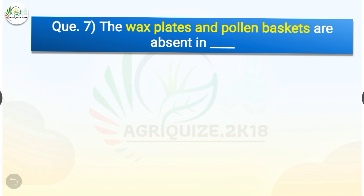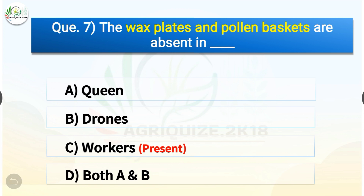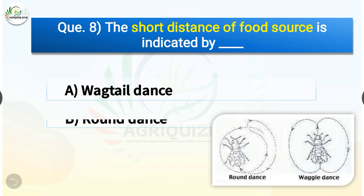Question number seven: The wax plates and pollen baskets are absent in which of the following? The options are: queen, drones, workers, or both A and B. The correct answer is option D — both A and B. The wax plates and pollen baskets are absent in both queen and drones, whereas they are present in worker bees.